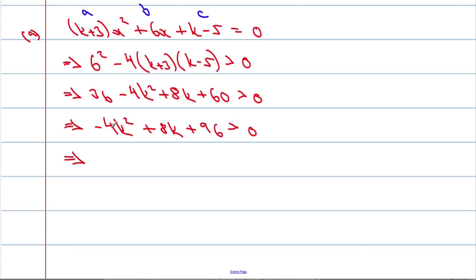And now, what we're going to do is divide everything by -4, so we get k² - 2k - 24, must be, and because we're dividing by a negative number, we've got to remember to change the inequality, must be less than 0.